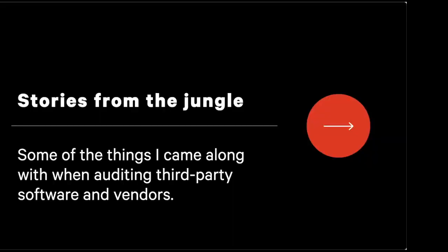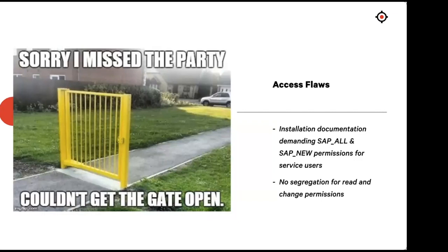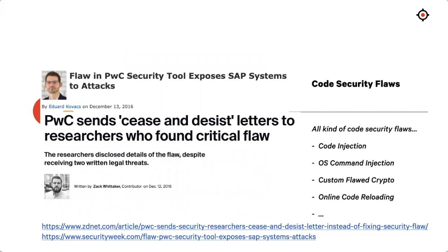Some stories from the wild — things I came across when auditing third-party software and vendors. Starting with very typical access flaws: the installation documentation demands assigning an interface user most-all possible privileges, such as assigning broad permissions for a service user. Basic things like read and change permissions not being segregated within the programming implementation. And, of course, all kinds of code security flaws — code security flaws exist in custom developments, in the SAP standard, and of course also in third-party solutions.